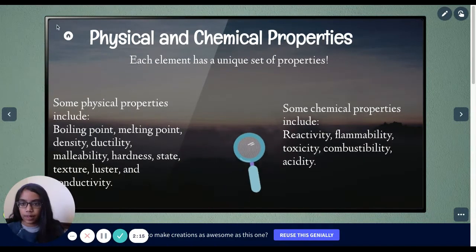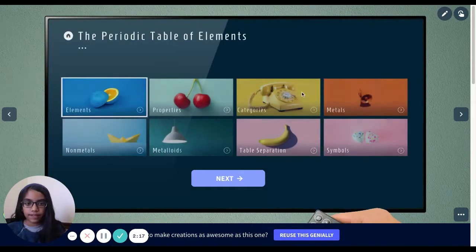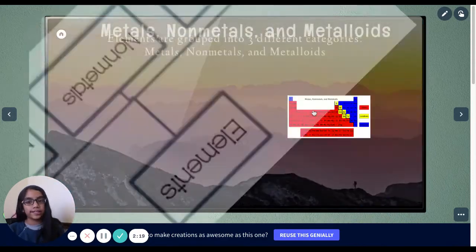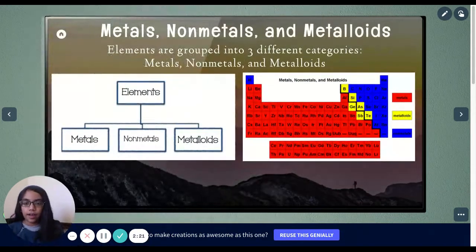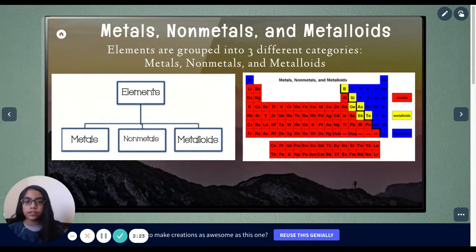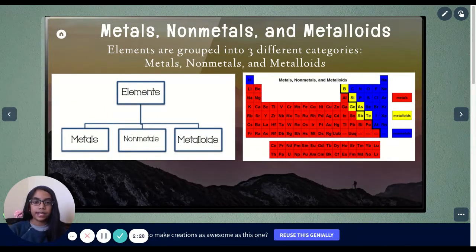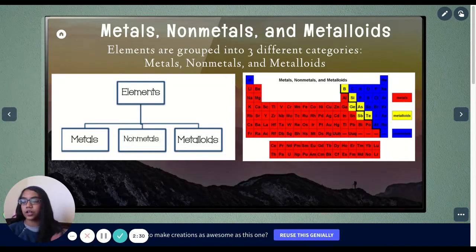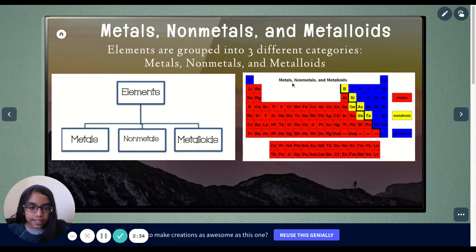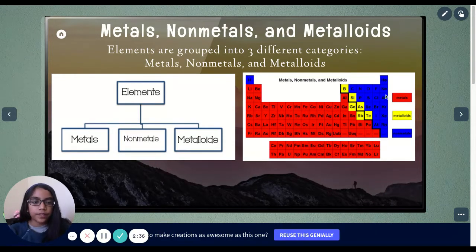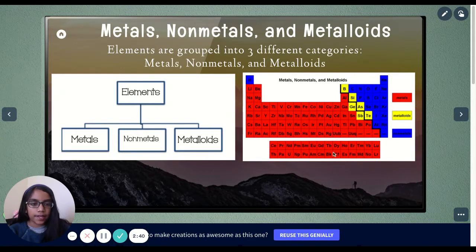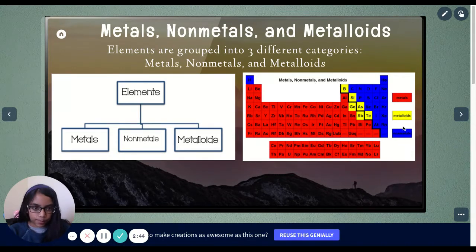So let's move on to the categories. Metals, non-metals, and metalloids. That is what the periodic table of elements, all the elements are grouped into. As you can see in this picture, all the red elements are metals, all the yellow elements are metalloids, and all the blue elements are non-metals.